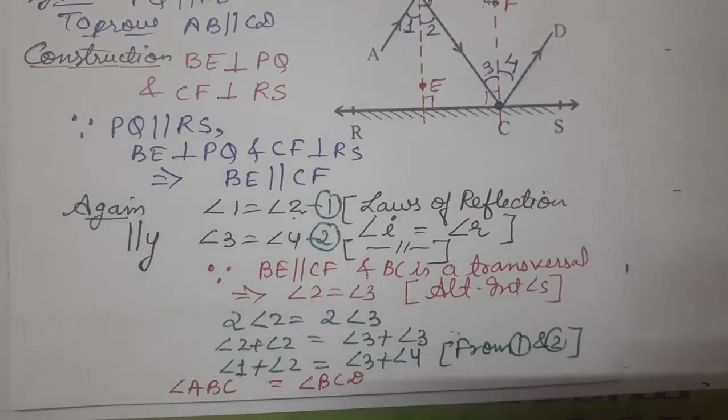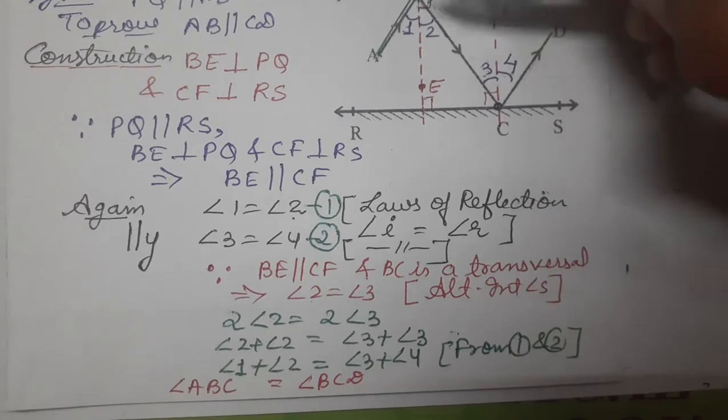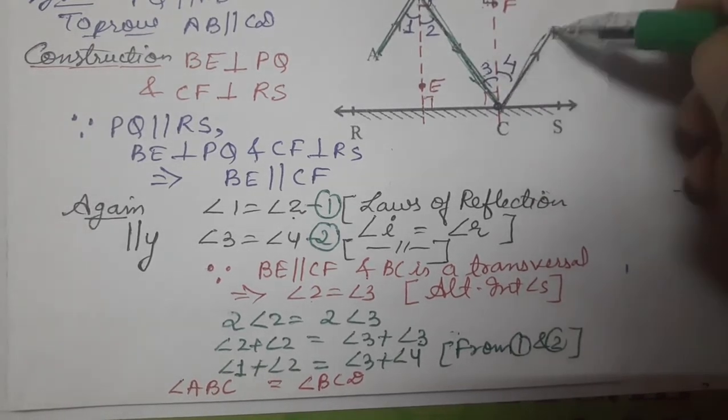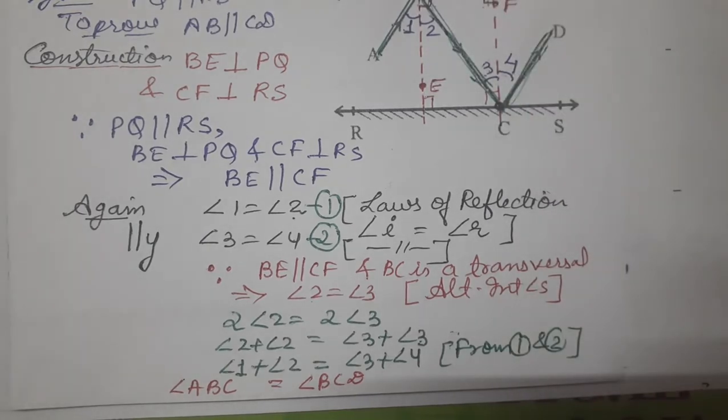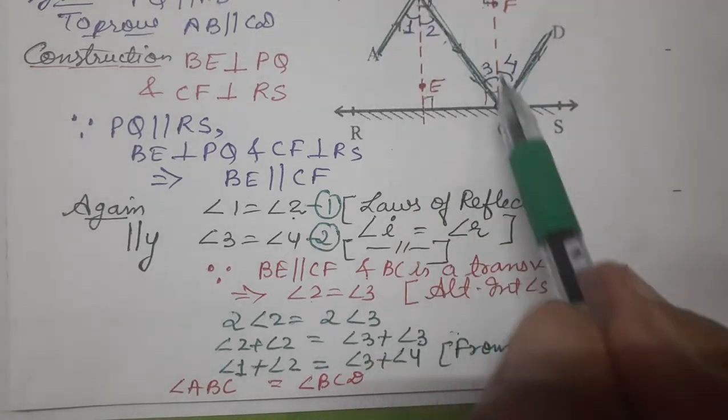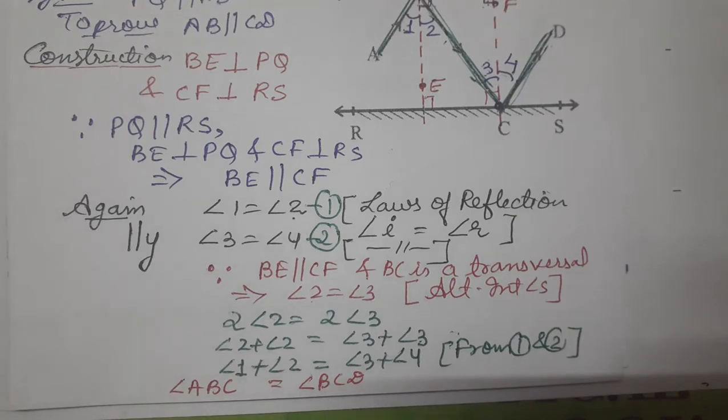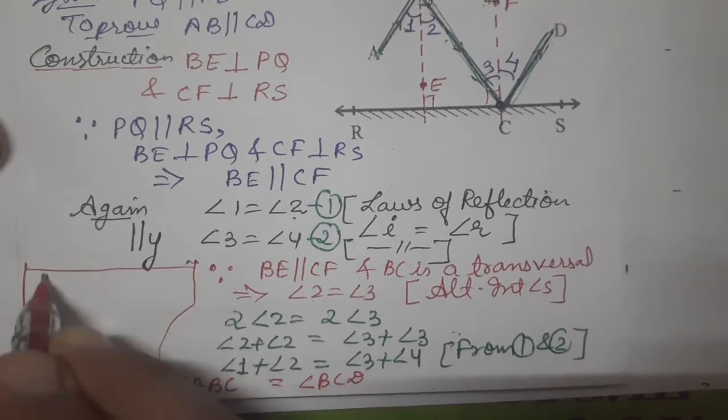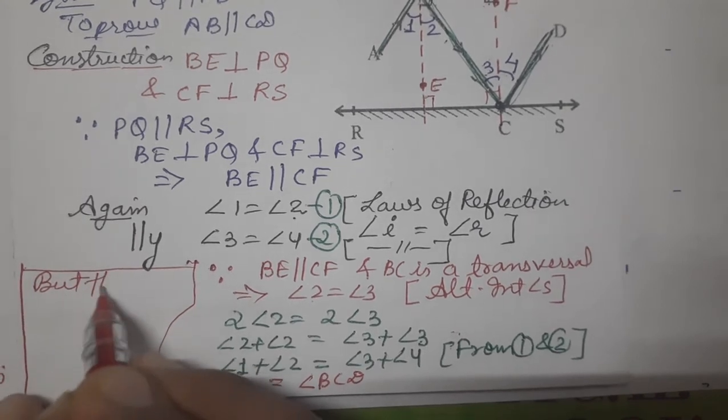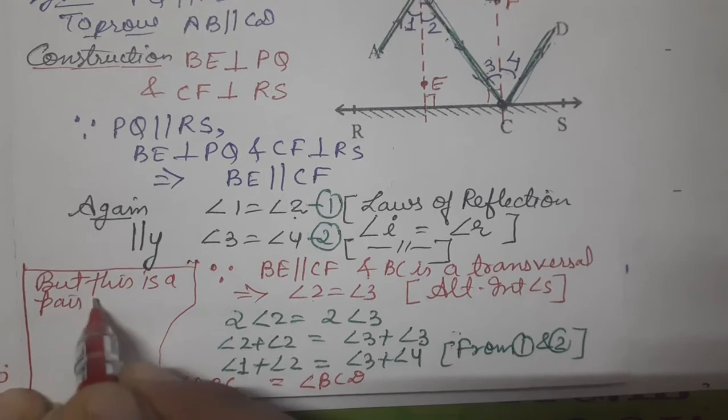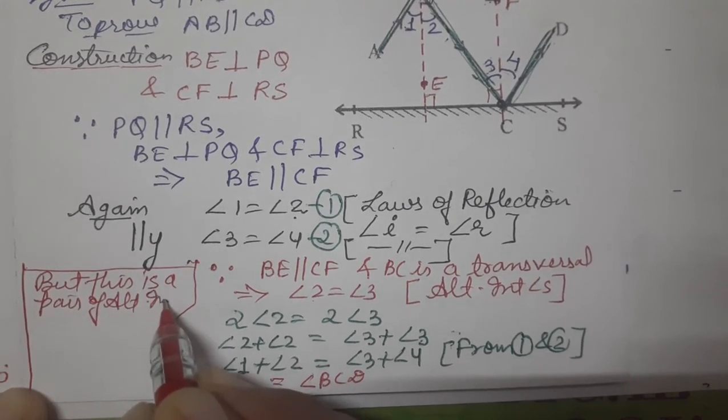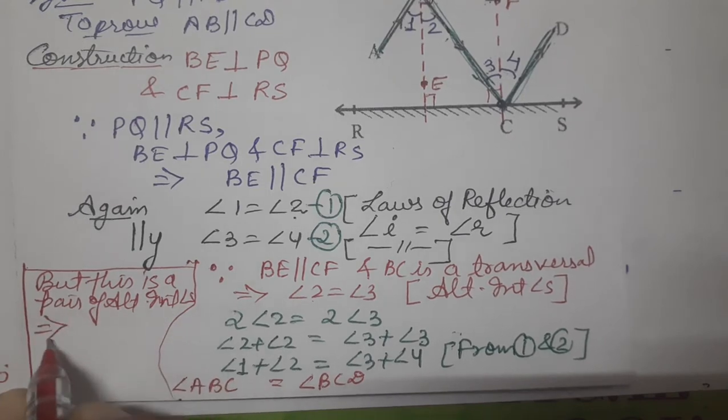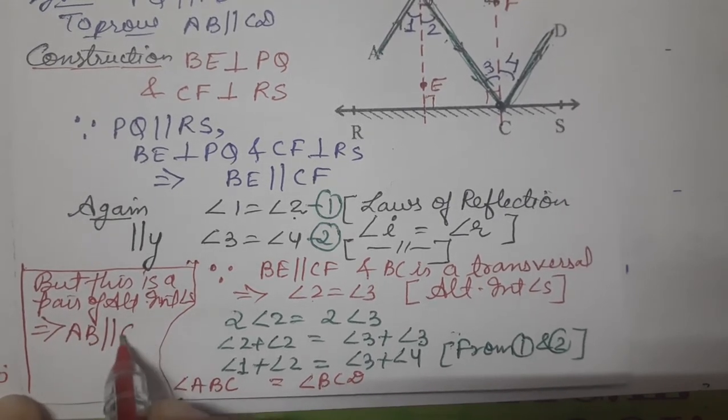But this is a pair of alternate interior angles. See, this Z is forming. Angle 1 plus 2, this Z in green color. So ABC equals BCD, but this is a pair of alternate interior angles.